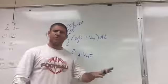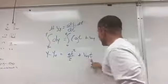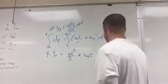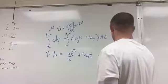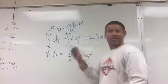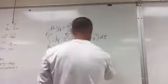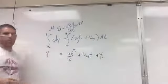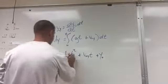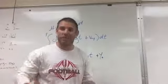Since we were given bounds, there's no plus C needed. Evaluating at the bounds and moving y-initial to the right side gives us your third kinematic equation: y equals one-half g t squared plus initial velocity in Y times time plus y-initial. This gives you that parabolic shape.